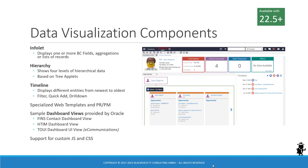Data visualization components, or dashboards as Oracle calls them, are new in 22.5. This is an exciting new category of applet. The screenshot shows a dashboard view made up primarily of new types of applets such as infolets, which can display one or more fields including aggregations or a list of records in a tile style that consumes only a minimum amount of space.